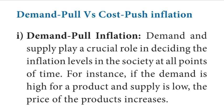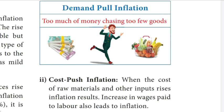Question number 6: Explain demand-pull and cost-push inflation. Demand-pull inflation: demand and supply play a crucial role in determining the inflation level. When demand is high for a product and supply is low, the price of the product increases. Cost-push inflation: when the cost of raw materials and other inputs rises, inflation results. An increase in wages paid to labor also leads to inflation.